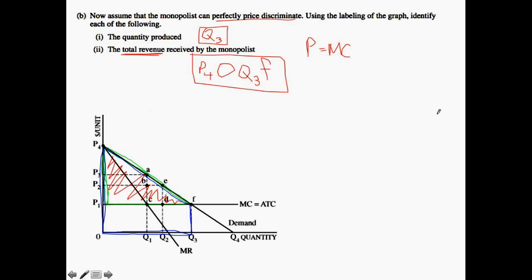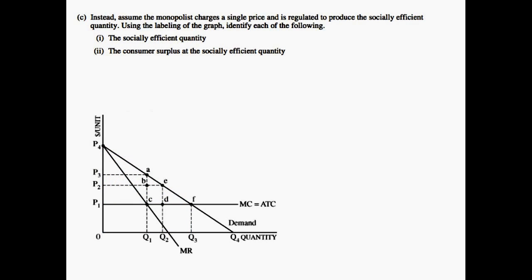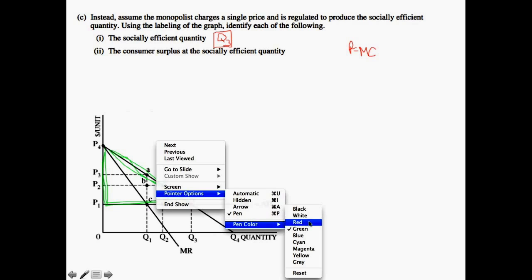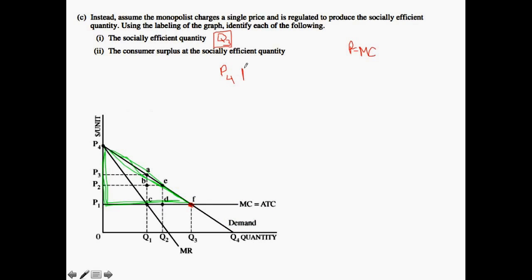And that is it for Part B. In Part C we're asked: assume the monopolist charges a single price and is regulated to produce the socially efficient quantity. We've already done this analysis — we know that price would equal marginal cost in the socially efficient allocation, and therefore Q3 is the socially efficient quantity. The consumer surplus is that triangle above the marginal cost: P4, P1, and F.